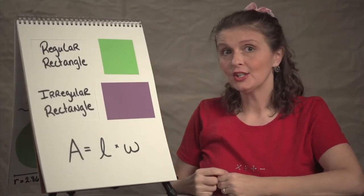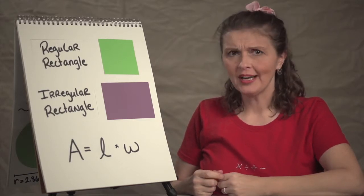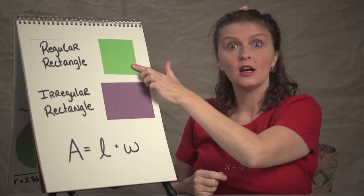A regular shape means that all the sides have the same length. So a regular rectangle is actually a square.